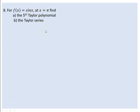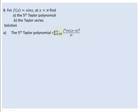The Taylor polynomial at x = π is obtained using the formula: the sum running from k = 0 up to n of the k-th derivative of f at the center value, times (x minus center)^k over k factorial. We will use this to write out the fifth Taylor polynomial.